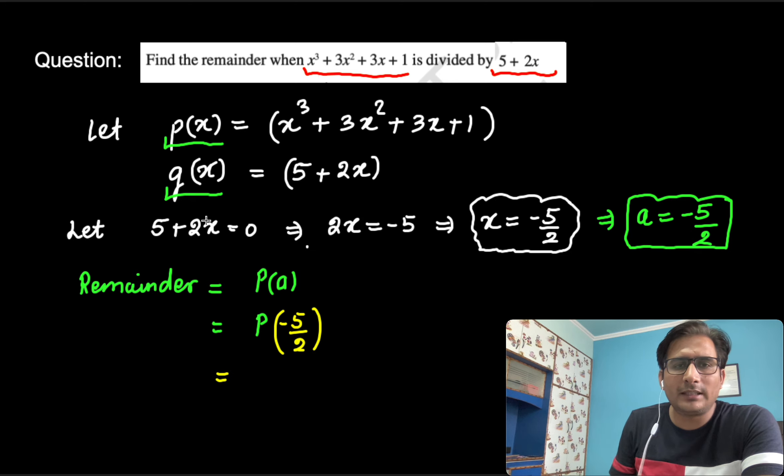What is p(x)? p(x) is given this. p minus 5 by 2 we need. At the place of x in p(x), we need to find out p(-5/2). We will find out p minus 5 by 2.